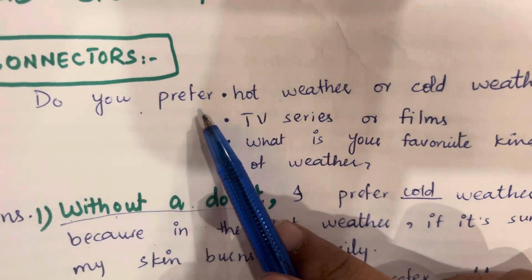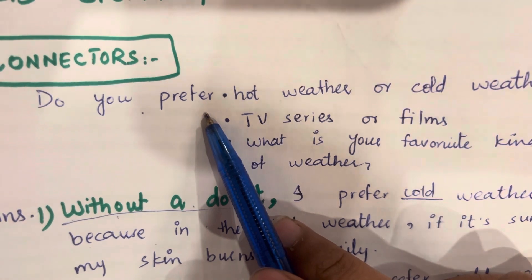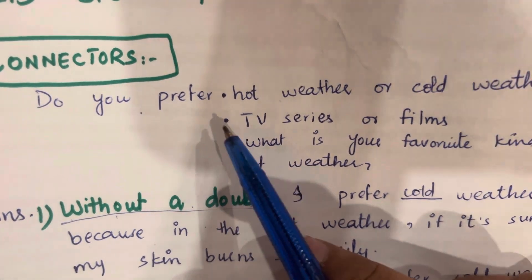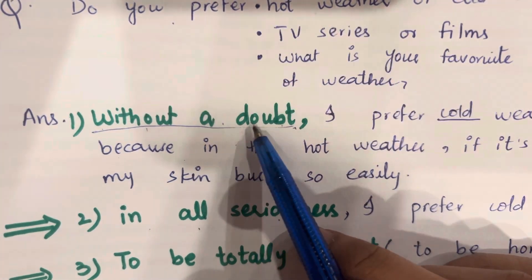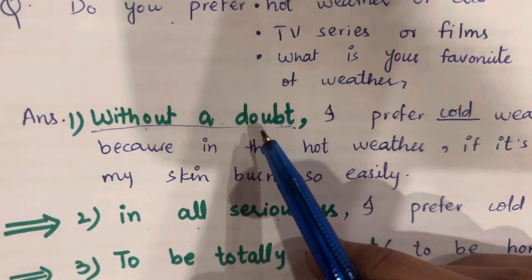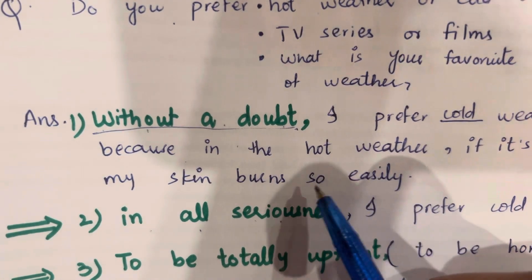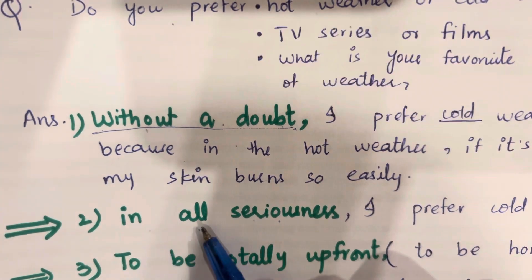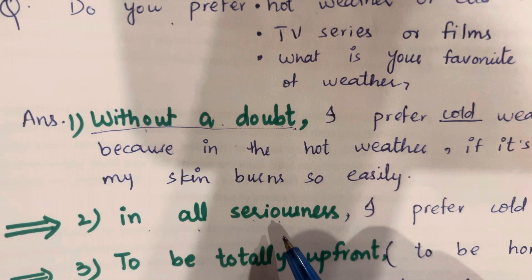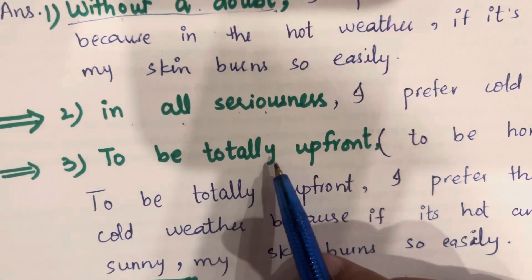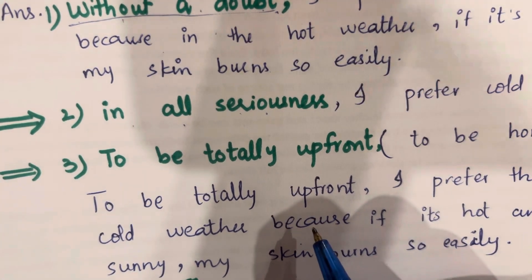The examiner can also ask 'do you prefer an apartment or a house?' You can use any of the three connectors: 'Without a doubt, I love to live in an apartment because...', or 'In all seriousness, I prefer to live in an apartment because...', or 'To be totally upfront, I prefer to live in an apartment because...'